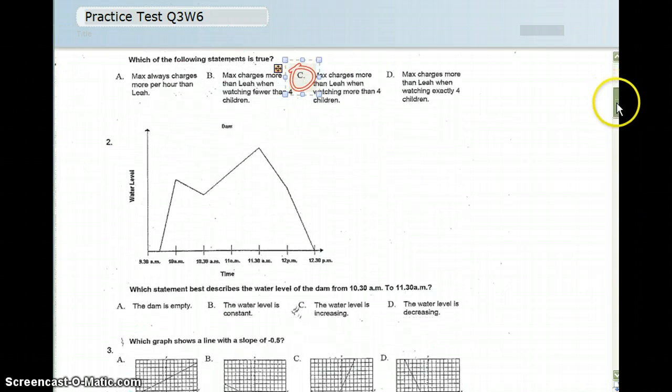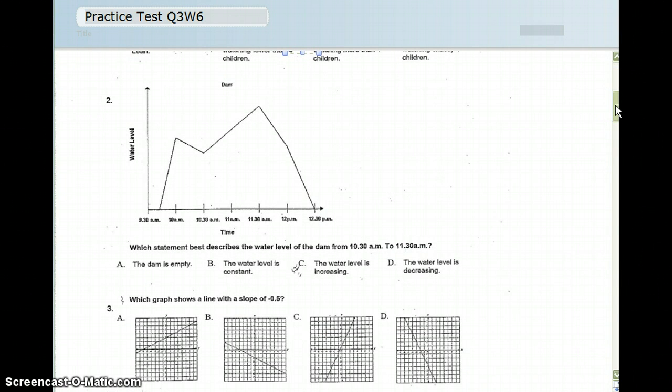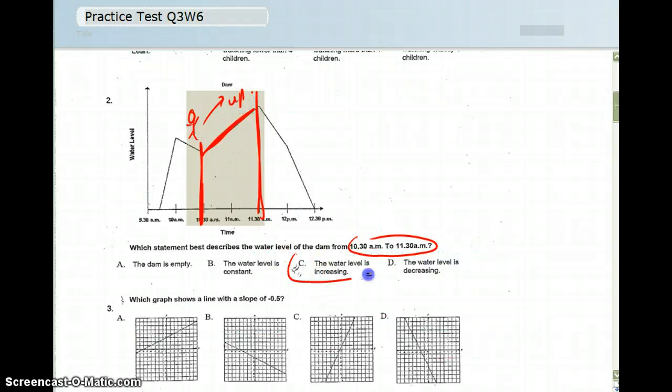Question number two is asking me to look for where the water level will be between 10:30 and 11:30. Here is 10:30 and here is 11:30. Between here I see this line and the water level is going from here to there. It is going up, so that would mean that the water level is increasing.